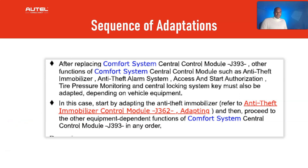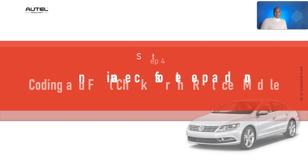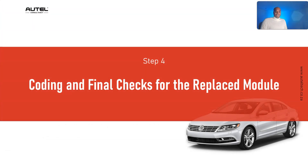Start by adapting the anti-theft immobilizer and then proceed to the other ones. In plain English, when you do this configuration procedure the car is not going to start, so if you don't have the IM608 or the Autel software you need to at least have some type of strategy to do this adaptation for the keys.